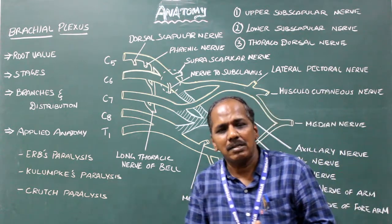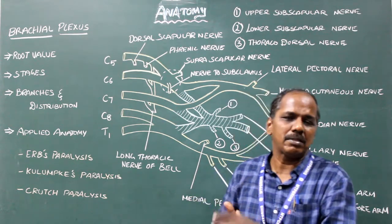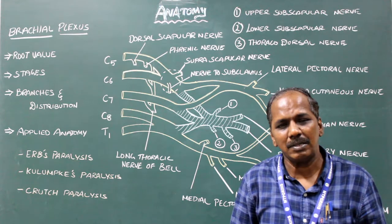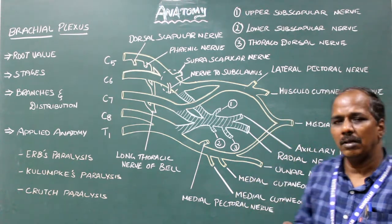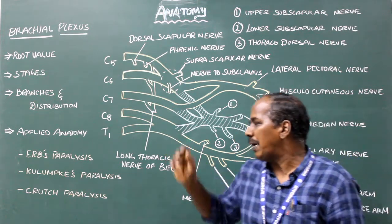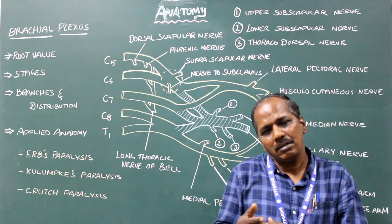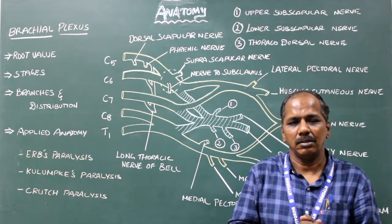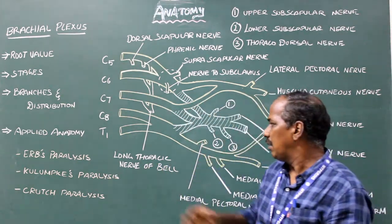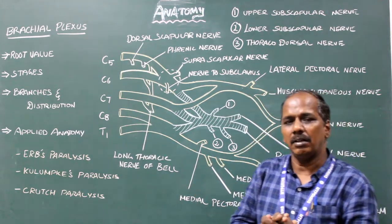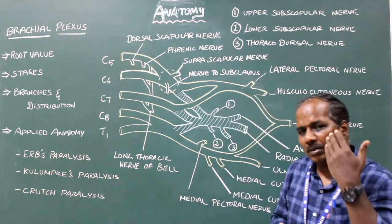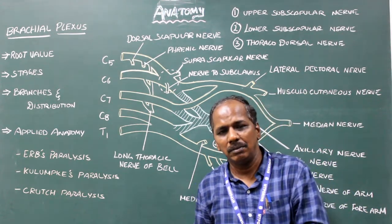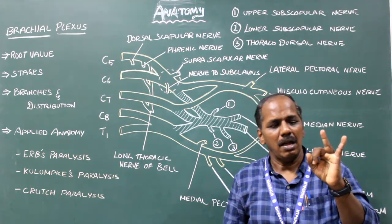Number two: Klumpke's paralysis. The lower trunk is affected; especially the ulnar nerve is the main nerve injured. There is damage to the intrinsic muscles of the hand, resulting in claw hand. Since C8 and T1 are affected, the sympathetic fibers passing through T1 to the head and neck are also affected, resulting in Horner's syndrome, which includes ptosis, anhidrosis, and miosis.